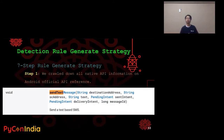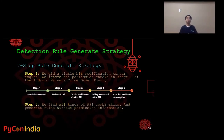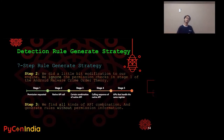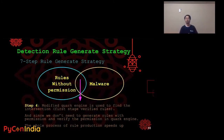So we developed a seven-step rule-generation strategy. Step one: we crawl all native API information from the Android official API reference — for example, for sendTextMessage you can see its input parameters, return value, and description. Step two: we made a small modification to our engine — we ignore the permissions check in stage one of the Android malware crime order theory. Step three: we find all kinds of API combinations and generate rules without permissions information. Step four: we use the modified Quark Engine to find the intersection of those rules and the malware. We call rules in the intersection 'first-stage verified rules' — meaning they need to be verified again. By not requiring permissions in rule generation and verification, the whole process speeds up significantly.